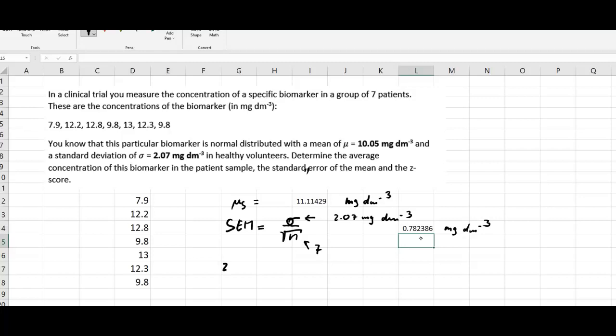Now for the Z-score. That is not terribly difficult to calculate. We just simply take the sample mean that we've got minus the population mean, and divide this by the standard error of the mean.